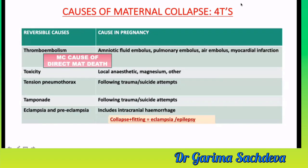The four T's include thromboembolism — the most common direct cause of maternal death — which could be due to amniotic fluid embolus, pulmonary embolus, air embolus, or myocardial infarction. Toxicity causes include local anesthetic toxicity and magnesium toxicity. Tension hemothorax and tamponade following trauma or suicide attempts are also included. Eclampsia and preeclampsia, including intracranial hemorrhage, are causes; both eclampsia and epilepsy present with collapse plus spitting.